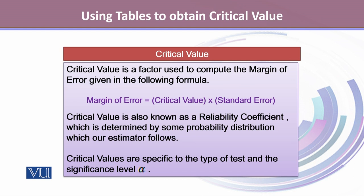As the probability distribution of the estimator changes, the way we look for this critical value changes. These critical values are specific to the type of test and the significance level that is called alpha.